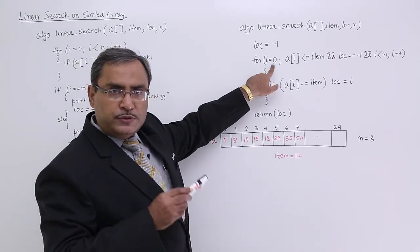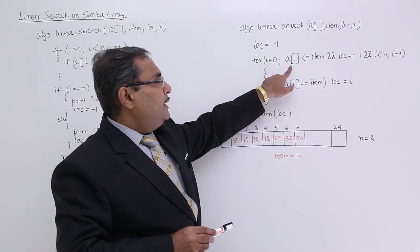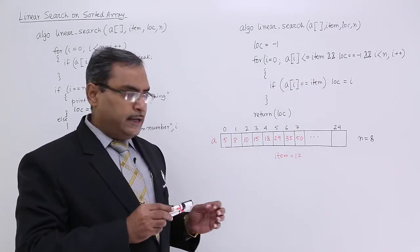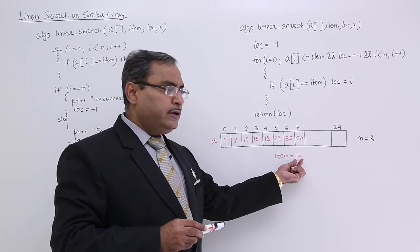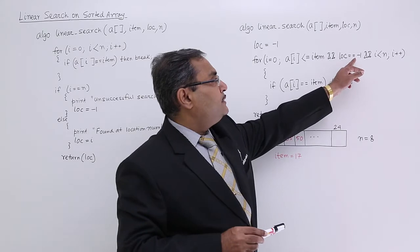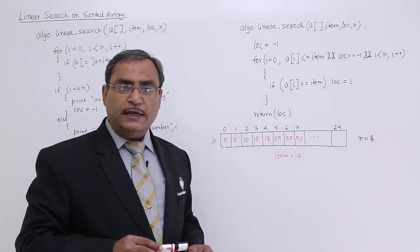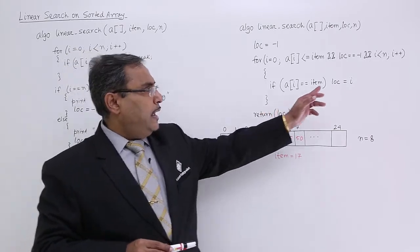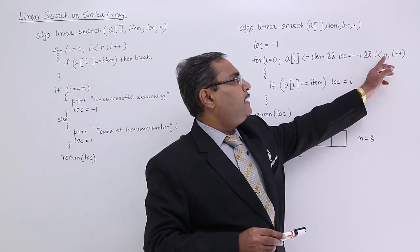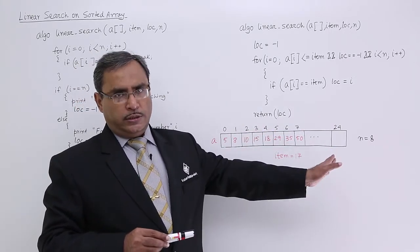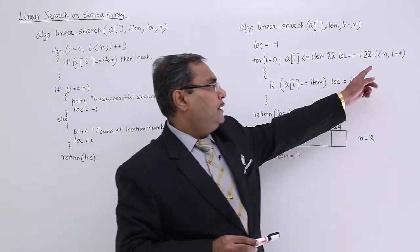Now for i is equal to 0, I am starting from the very first location. If a[i] is less than or equal to item, then I should proceed. And if lock is equal to minus 1, that means if I have not found this item till now, then I should proceed, and i is less than n, meaning the value of i has not crossed the upper limit, then i++.